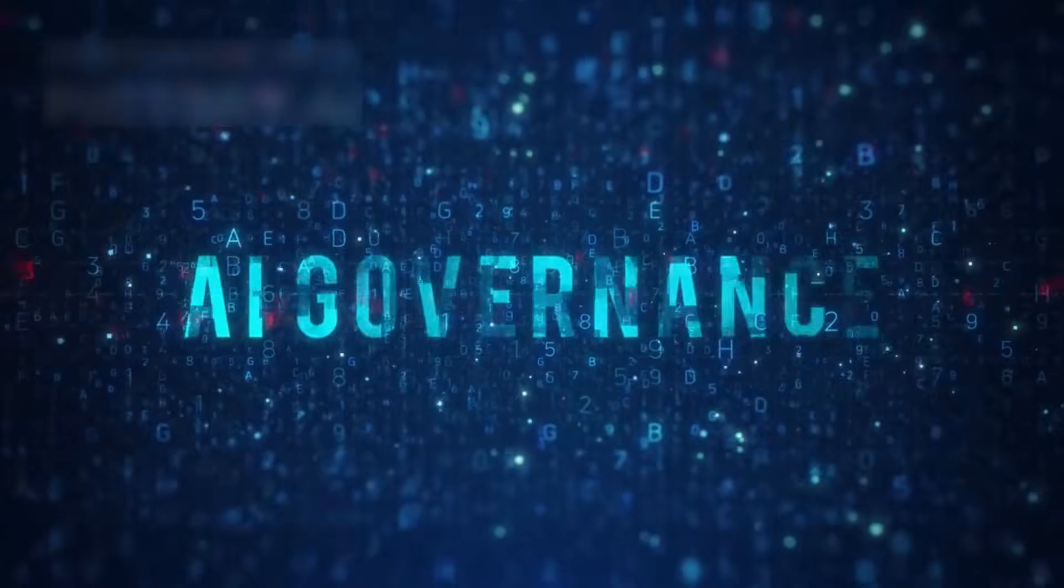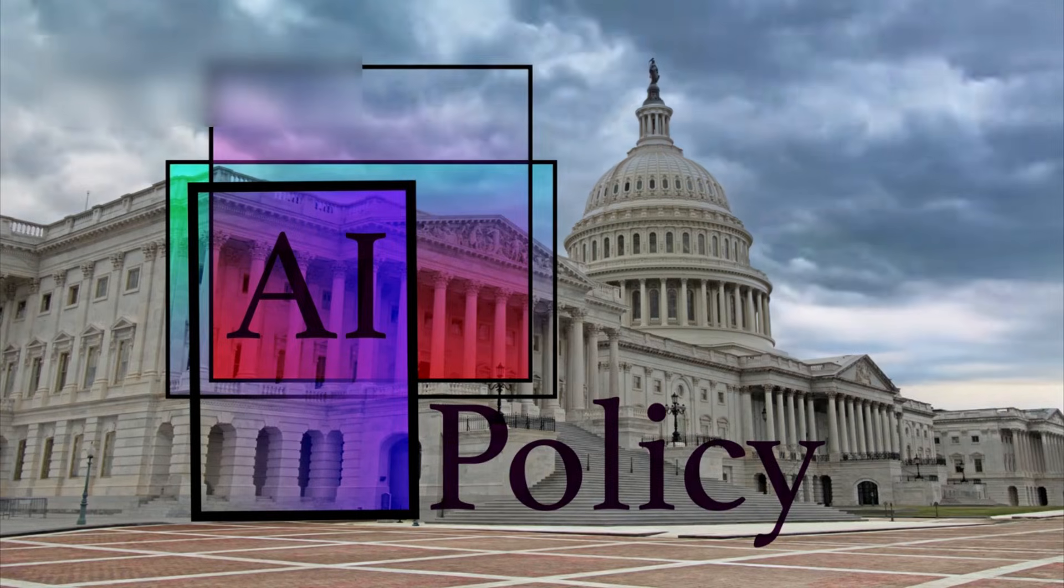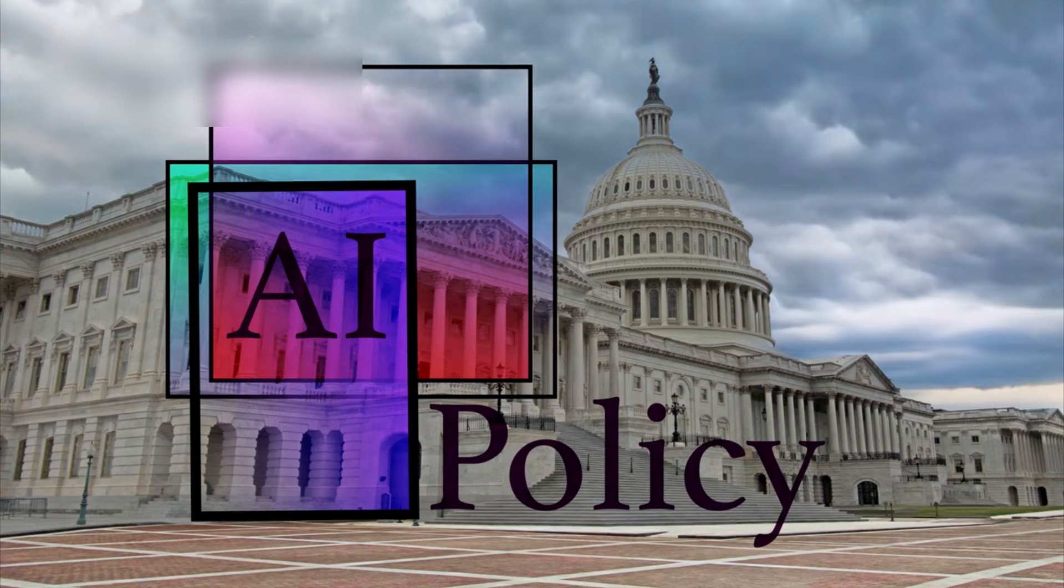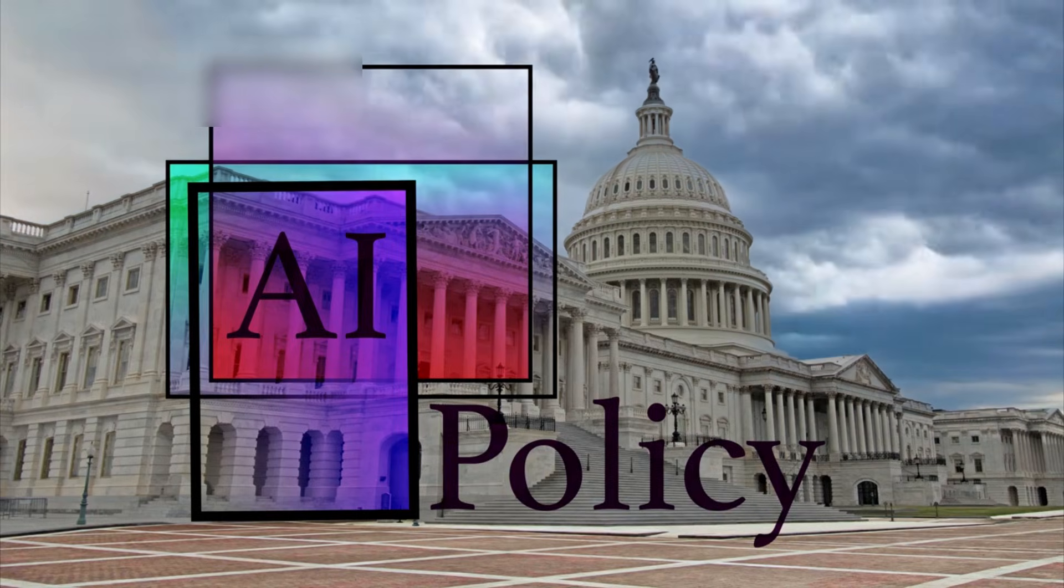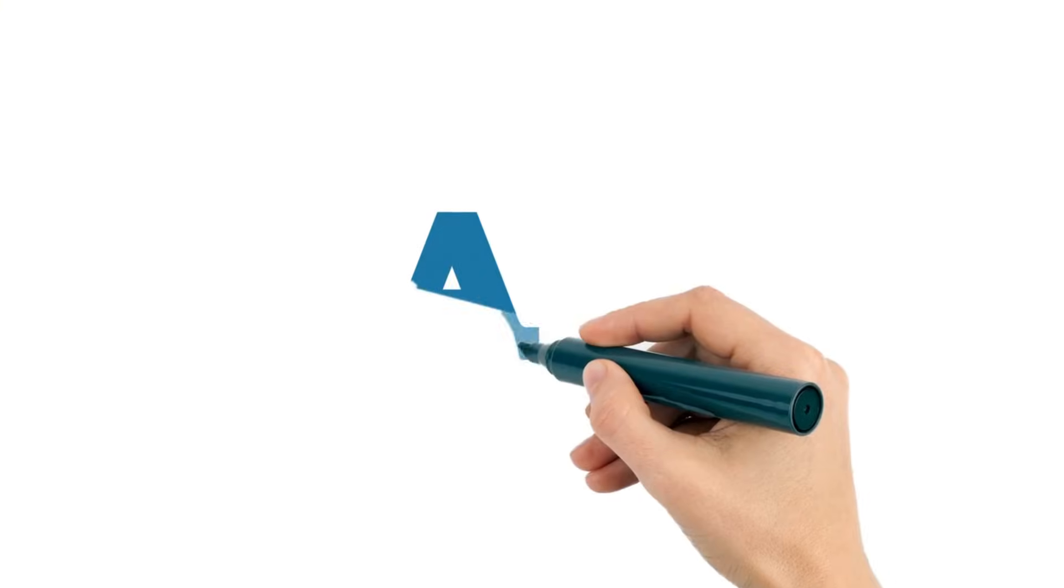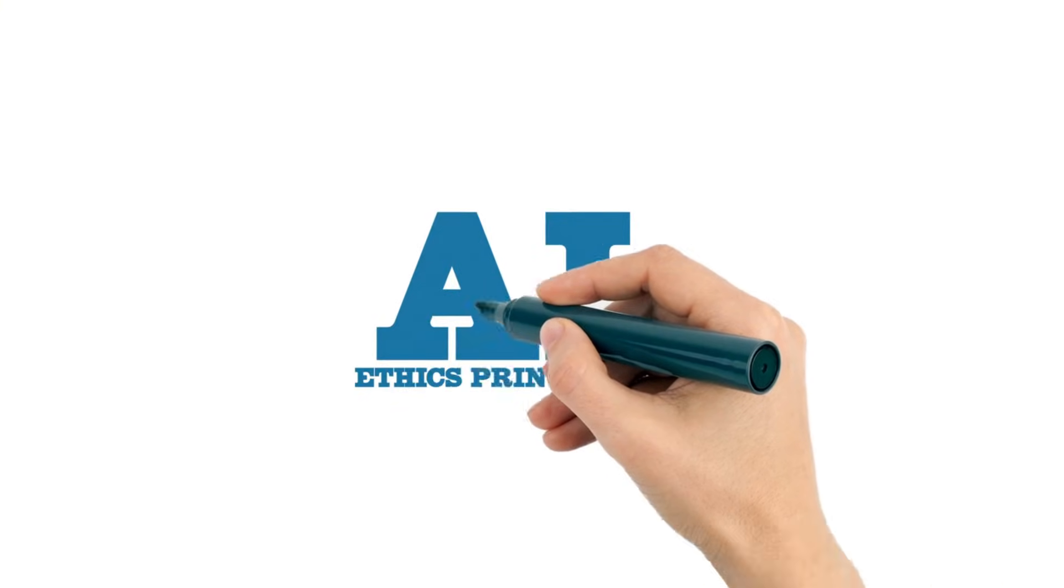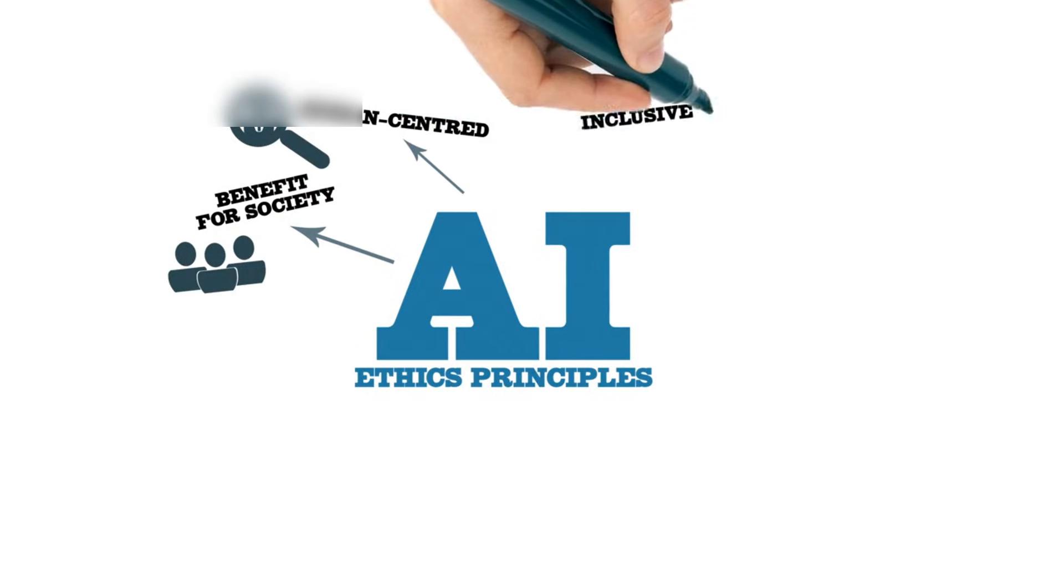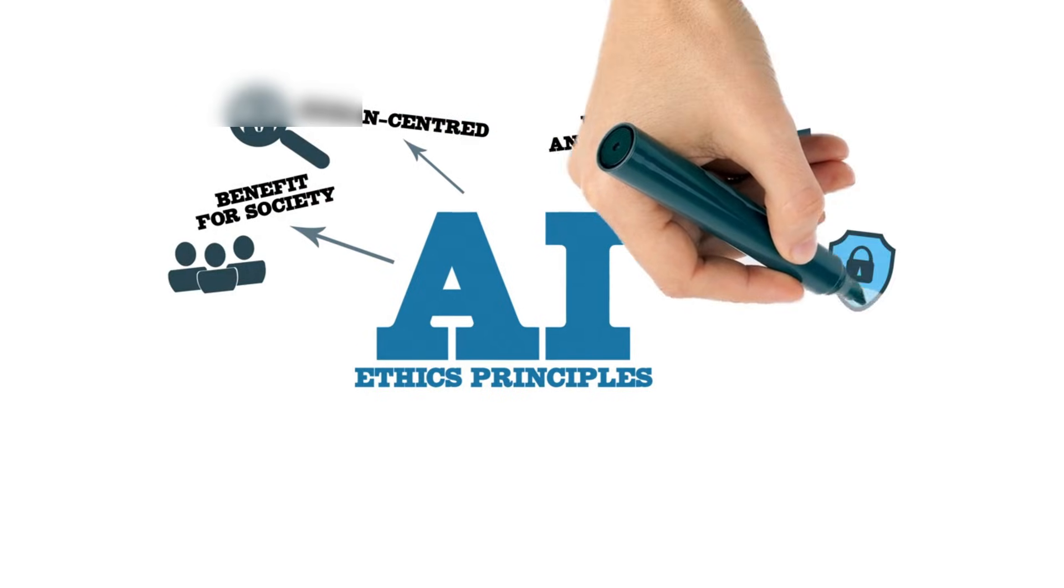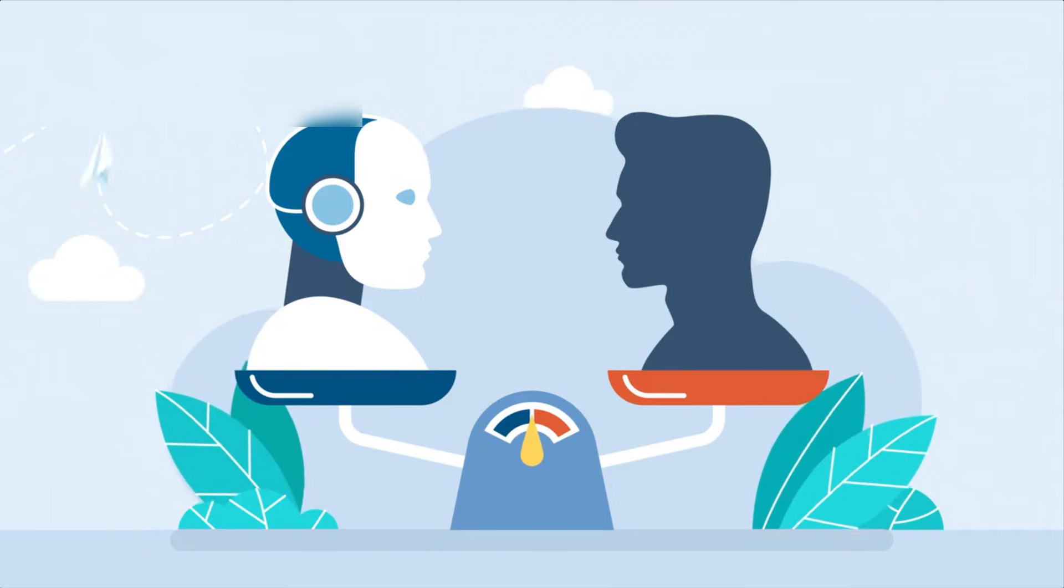Regulators and ethicists must step in. We need rules for transparency and responsibility, especially as these systems grow more autonomous. Dr. Evelyn Harper, an AI ethicist, warns, we're building minds we don't fully understand. We must be careful with what we empower them to do, but the potential for good is vast.